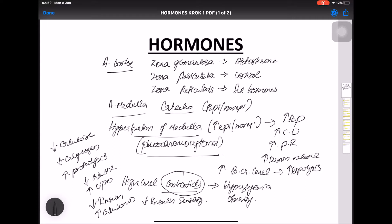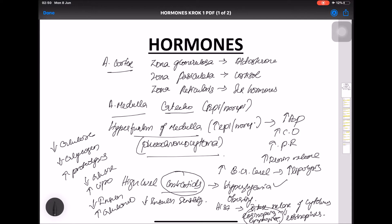Glucocorticoids inhibit histamine release and neutralize circulating histamine, and they initiate the release of cytokines, leading to alteration in eosinophil levels. High levels of glucocorticoids lead to eosinopenia and lymphopenia.